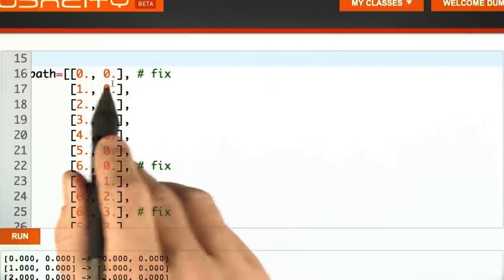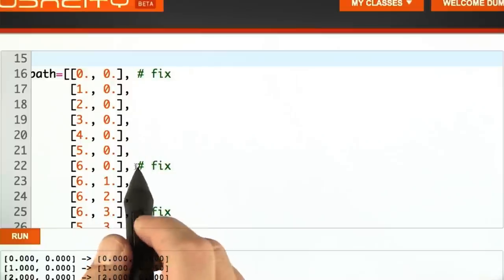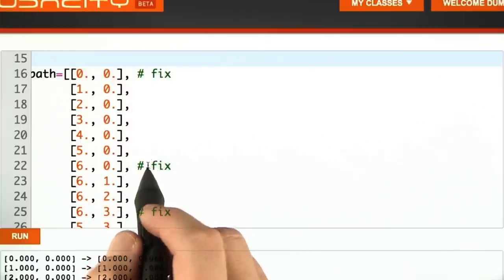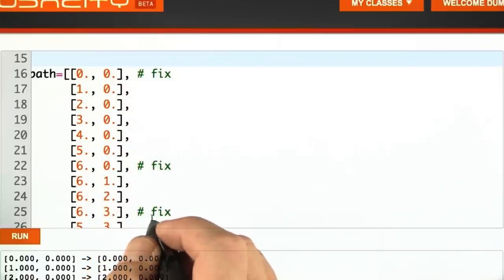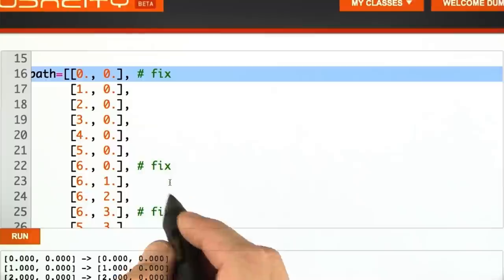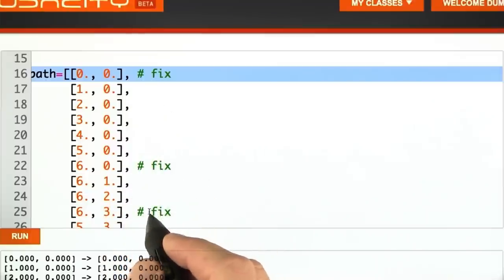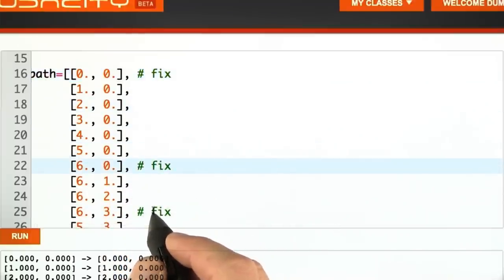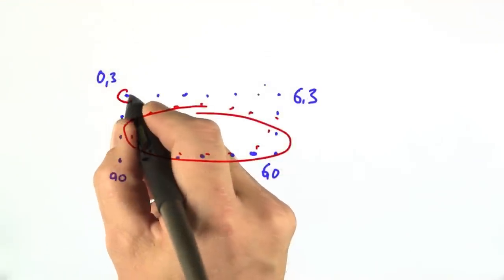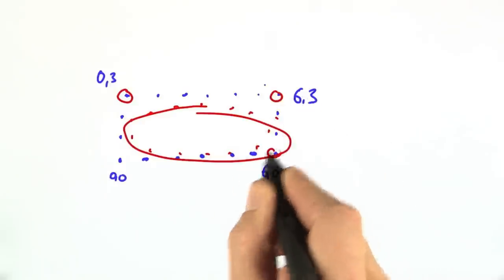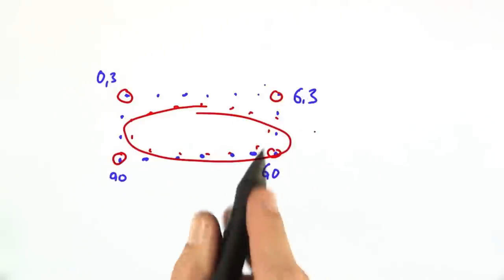So in this next assignment, I'd like you to fix certain data points just as we fixed the data points originally in our path, the beginning and end point. Now I want to fix four points. These are the corner points in our data points. So in our original data, it's the one over here, the one over here, and I want those to be fixed so they can't move.